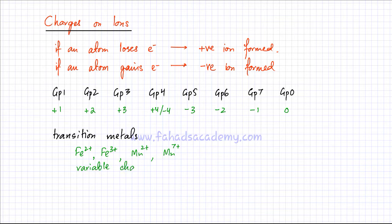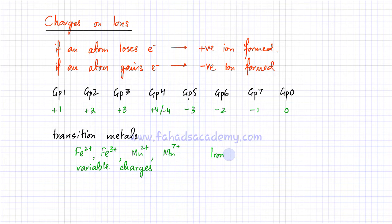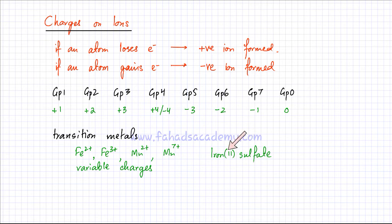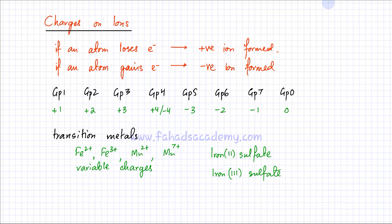Because transition metals have variable charges, whenever a compound containing a transition metal is mentioned, the charge will also be mentioned. For example, if somebody writes iron sulfate, you have to specify whether it's iron(II) sulfate — indicating iron has a plus two charge — or iron(III) sulfate, indicating iron has a charge of plus three. For transition metals, you can't predict the charge from the periodic table alone, so the charge on the ion will always be mentioned. Without this, you can't really form a formula containing a transition metal.